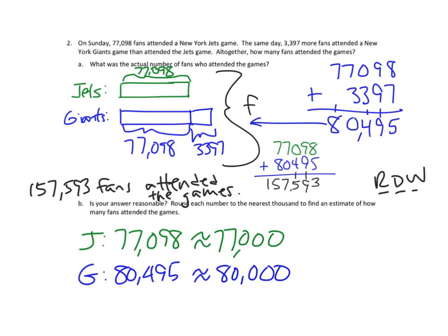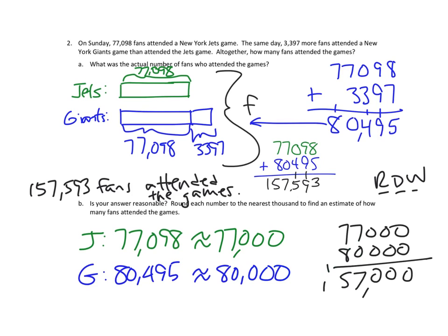And if we were to add those two together, 77,000 fans plus 80,000 fans would be 157,000 fans. And hey, so our estimate came out to 157,000 fans. Sorry, I kind of wrote this a little poorly. 157,000 fans was our estimate. Our actual full answer was 157,593.